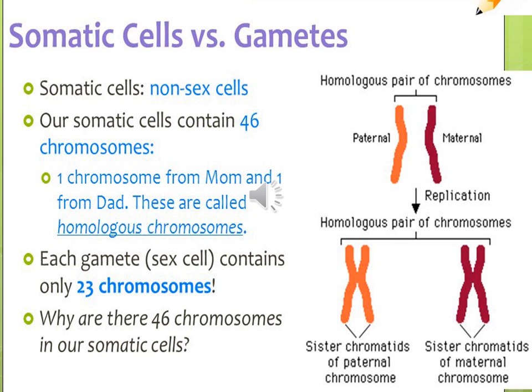In a diploid organism, the genome is composed of homologous chromosomes. One of each homologous pair comes from the mother and one comes from the father, called maternal and paternal chromosomes. These chromosomes are similar but not identical — each carries the same genes in the same order, but the alleles for each trait may not be the same. A haploid cell only has one set of chromosomes, like sex cells, either eggs or sperm.